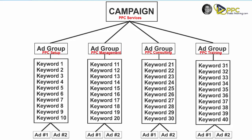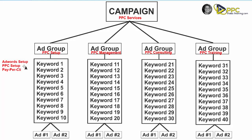I'll give you a quick example of what the keywords might be. Under our PPC setup ad group, we might have keywords like AdWords setup, PPC setup, and pay-per-click setup. In the next ad group, under PPC management, we might have keywords like pay-per-click management, PPC management, Google AdWords management, and just AdWords management.